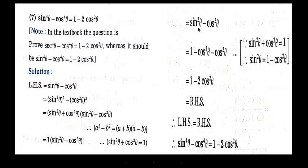So we have sin square theta minus cos square theta. Again using sin square theta plus cos square theta equals 1, taking cos square theta to the other side gives sin square theta equals 1 minus cos square theta. Substituting, we get 1 minus cos square theta minus cos square theta, which equals 1 minus 2 cos square theta. So left hand side equals right hand side. It is proved that sin raised to 4 theta minus cos raised to 4 theta is equal to 1 minus 2 cos square theta.